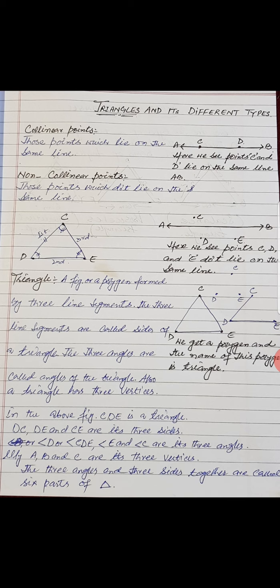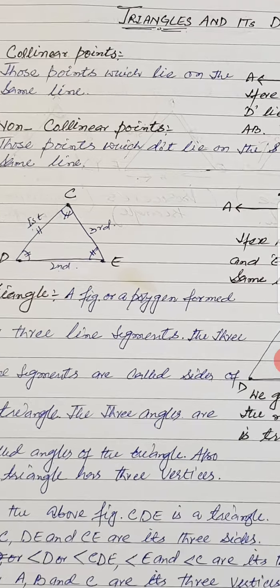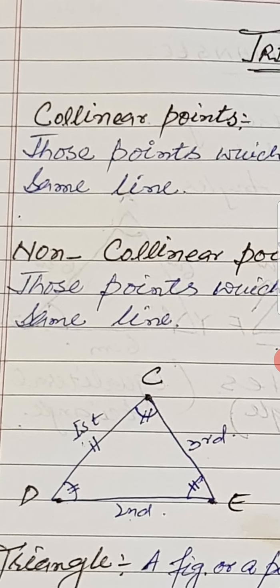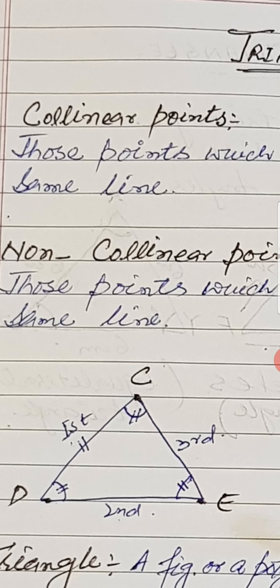Assalamu alaikum to all of you, my dear students. Today our topic is triangles and its different types. Before going to our topic, first of all we must know what are collinear points.